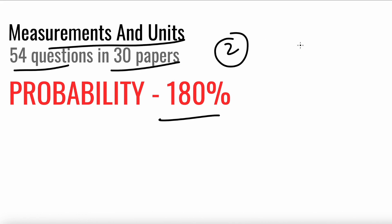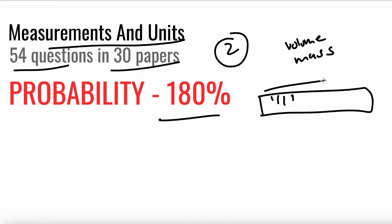Questions would include things like: they give you a cuboid with dimensions and you find the density — you find the volume, the mass, then the density. They could give you a string to find the length, a vernier caliper, a micrometer screw gauge, or a ruler with an object to measure. These are usually introductory questions on the first page, and you're likely to get at least two questions on Measurements and Units.